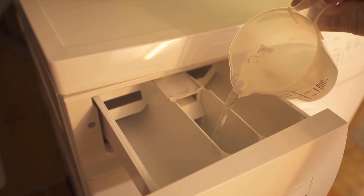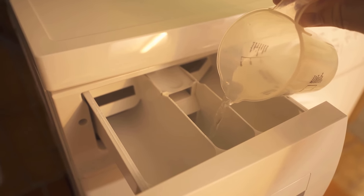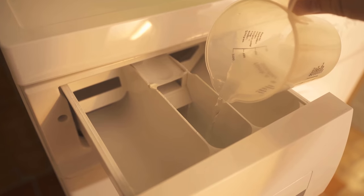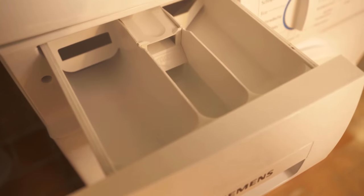All you have to do is pour it into the fabric softener compartment of your washing machine, where you normally put the fabric softener, and then you can wash your clothes normally.